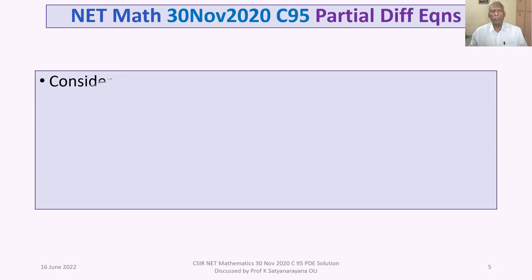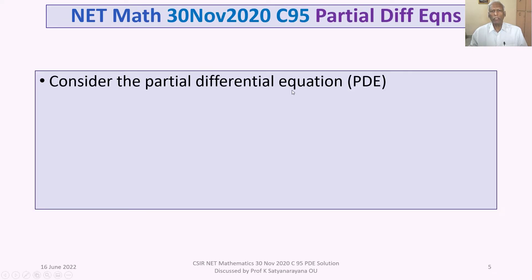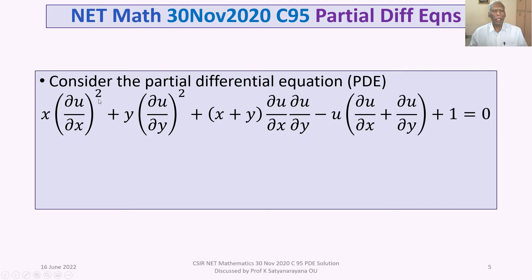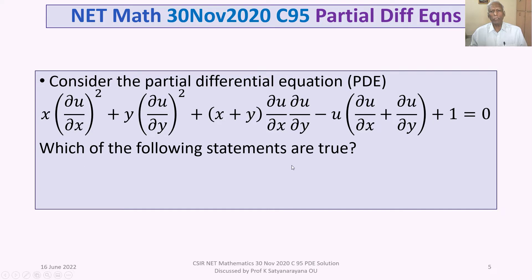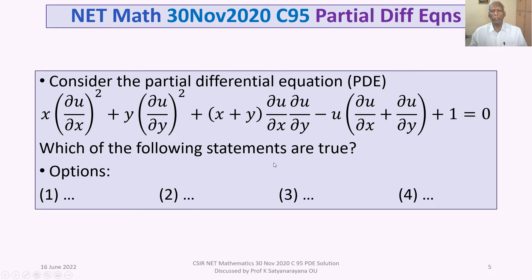The problem is: consider the partial differential equation (PDE) x(∂u/∂x)² + y(∂u/∂y)² + (x+y)(∂u/∂x)(∂u/∂y) − u(∂u/∂x + ∂u/∂y + 1) = 0. Which of the following statements are true? The four options are large and will be shown in the next slide.